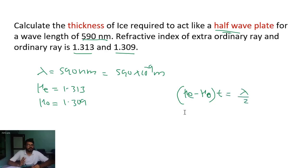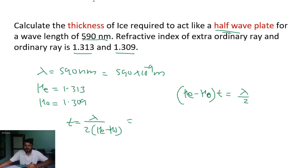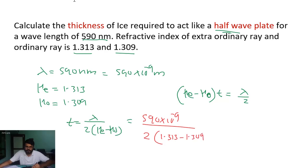Rearranging, the thickness t equals lambda divided by 2 times (μe minus μo). Substituting: t equals 590 times 10 to the minus 9, divided by 2 times (1.313 minus 1.309). That gives 590 times 10 to the minus 9 divided by 2 times 0.004.